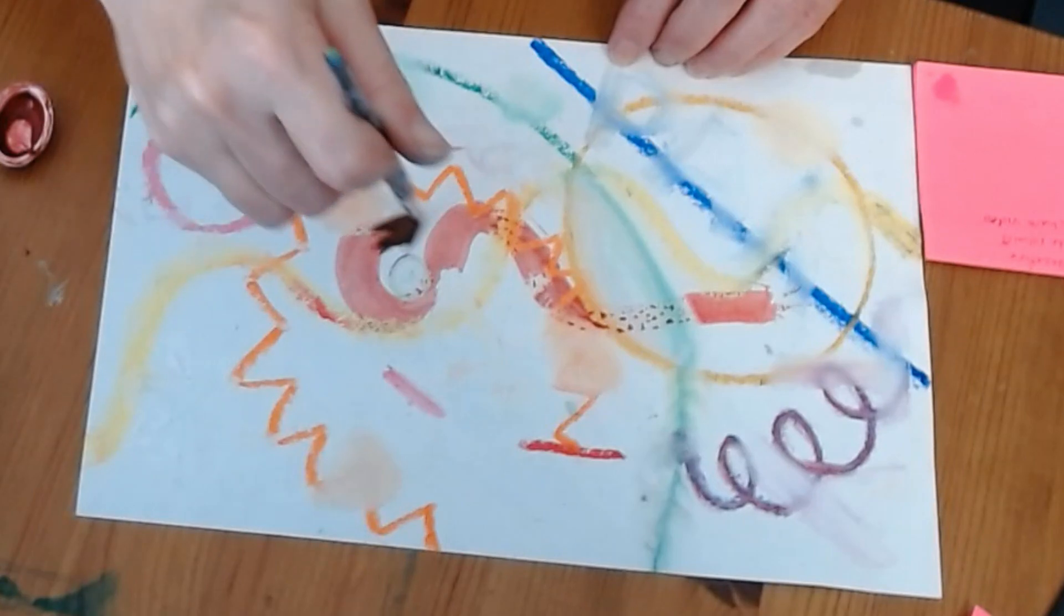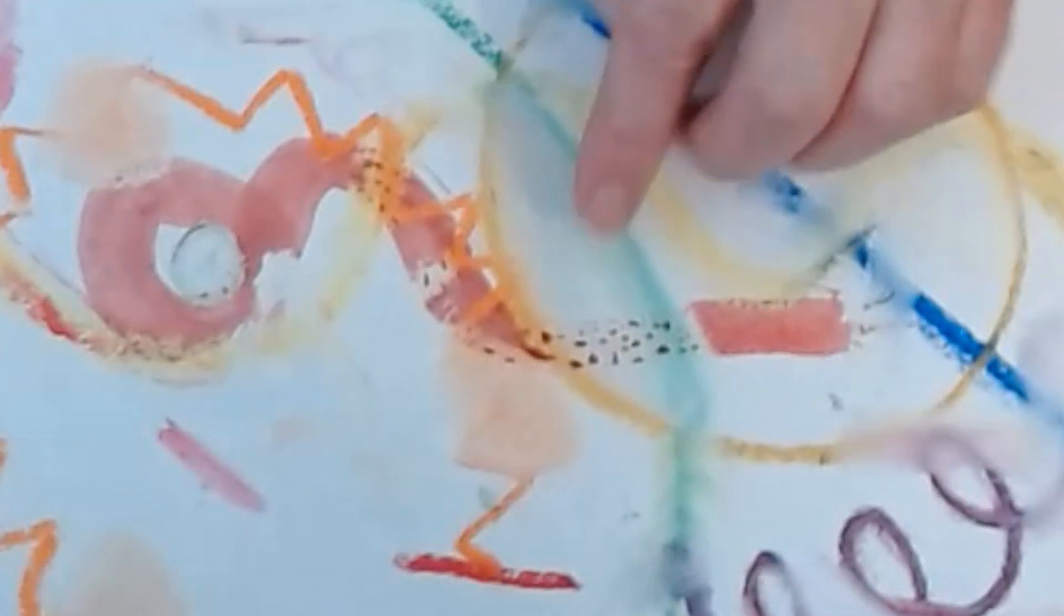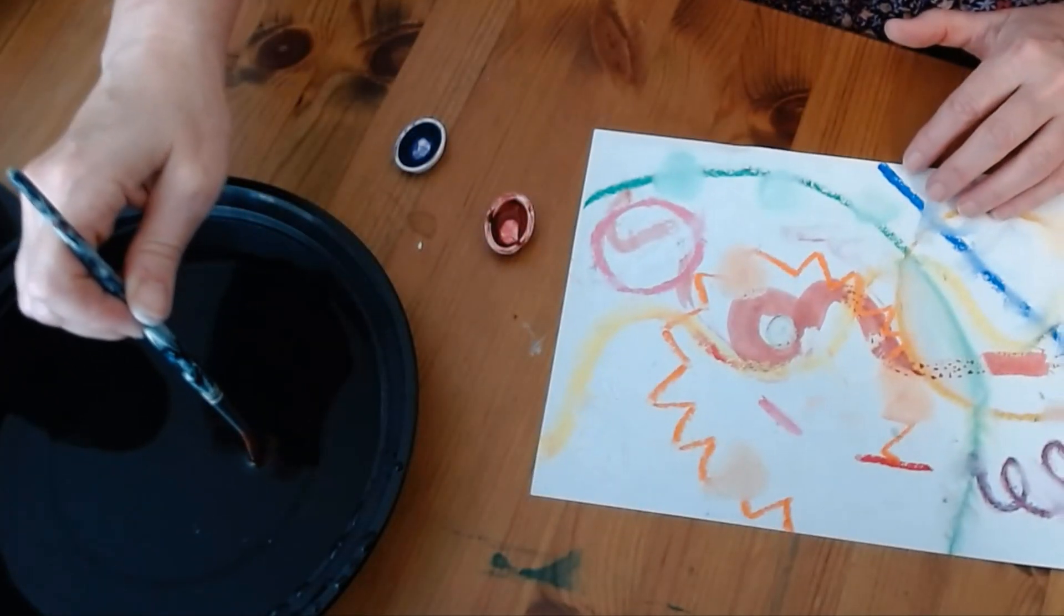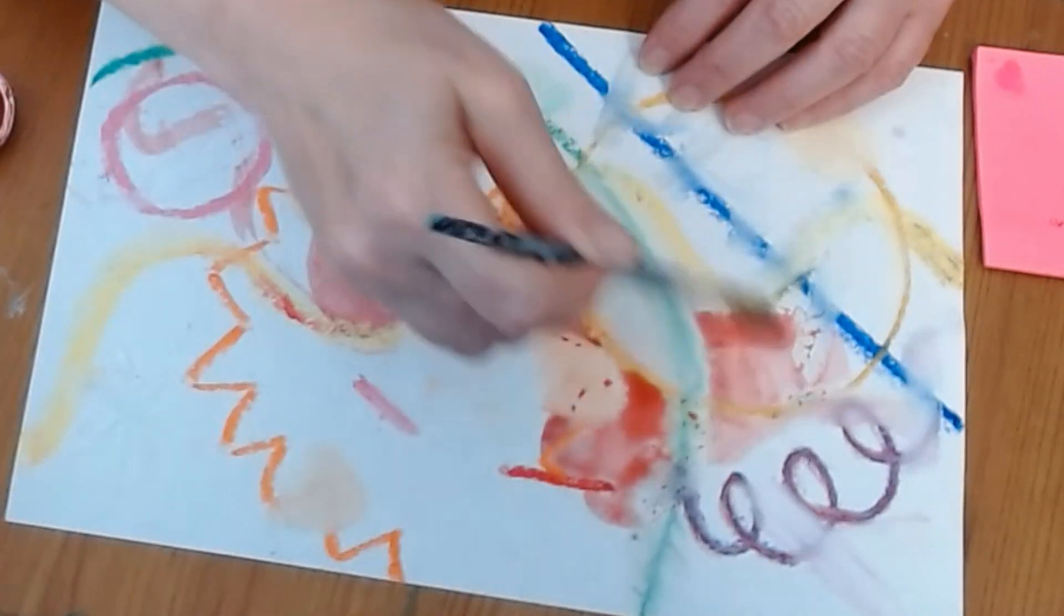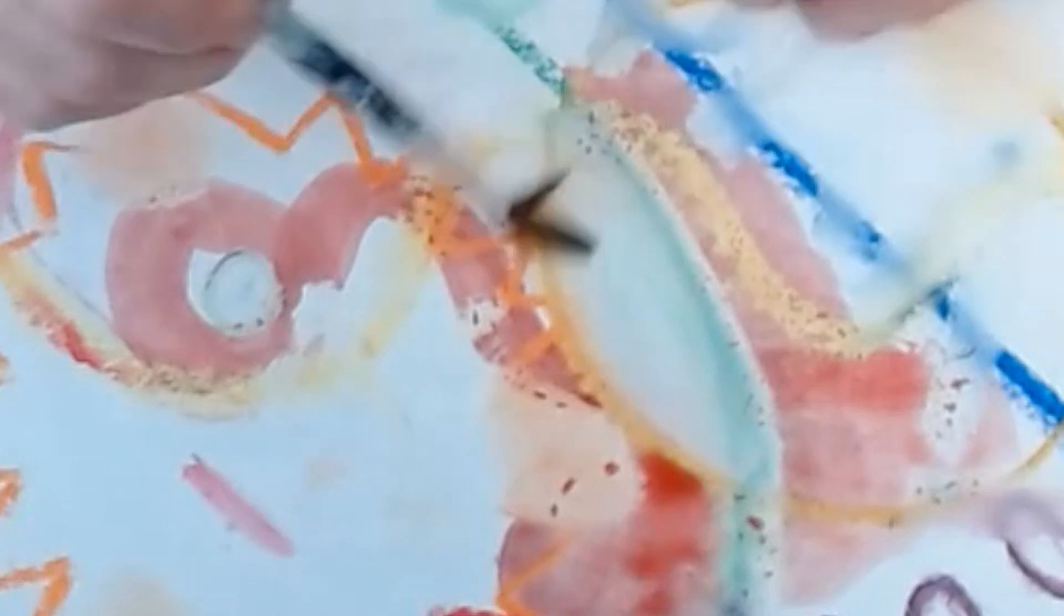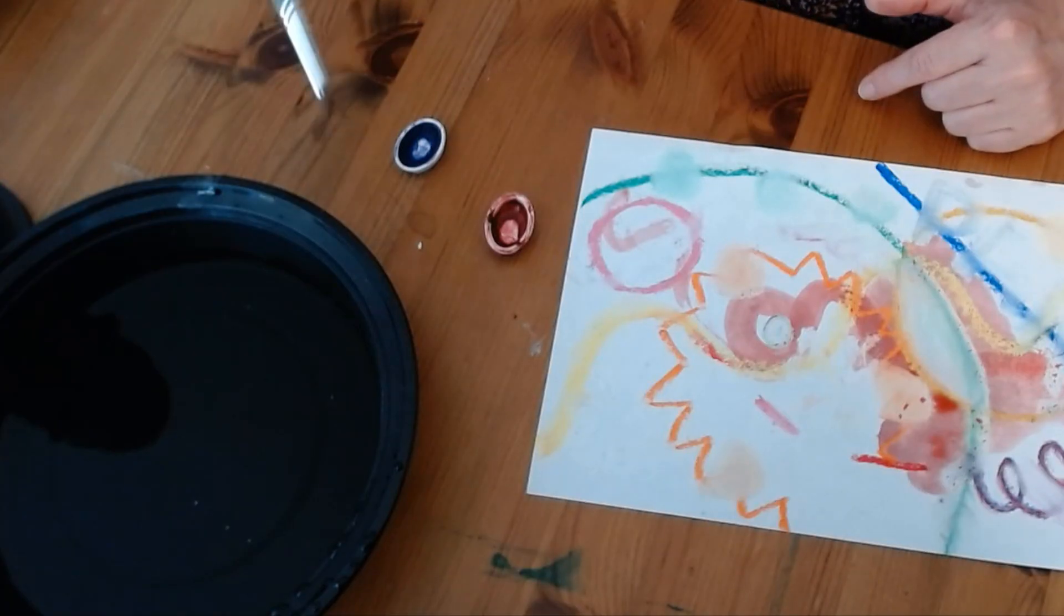Whoa, you can see it's starting to resist. The oil pastel is making the watercolor bead up a little bit. Now if I just take water, no paint, and move it around in a little circle, it comes right off. Isn't that cool? Look, this part resisted the paint.